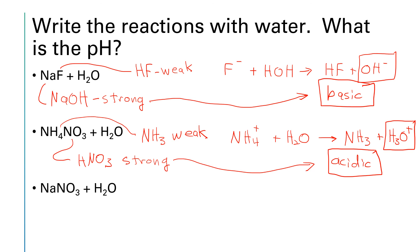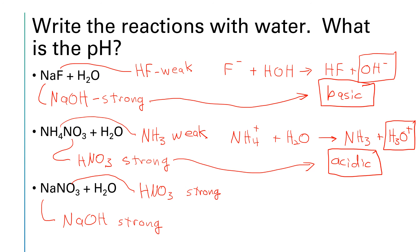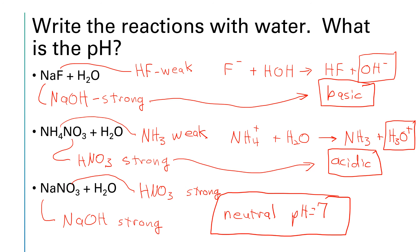Last example: sodium nitrate. The nitrate ion came from the strong acid HNO₃, and sodium ion came from the strong base NaOH. Since they are both strong, this is going to be a neutral salt — there will be no reaction with water. This is the one case where I would expect you to know the actual number for the pH: if it's neutral, the pH is 7.